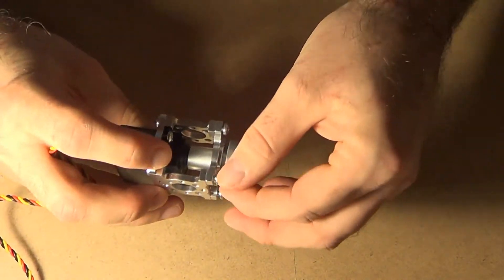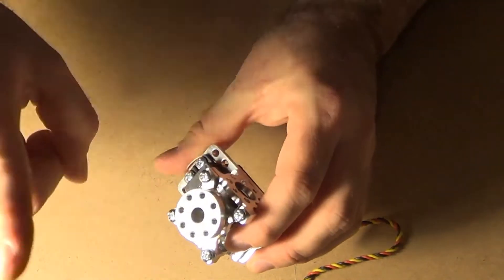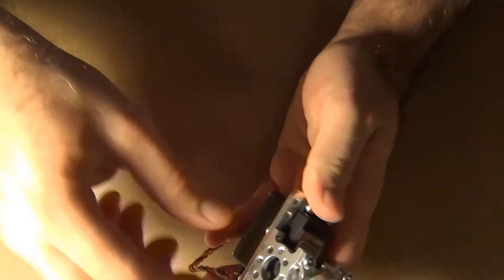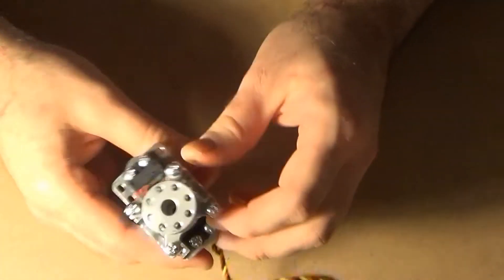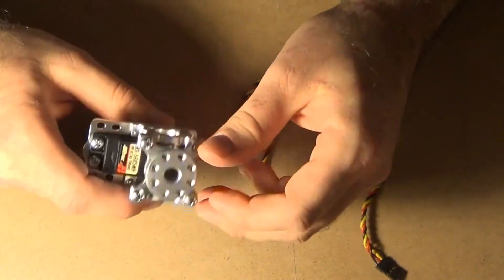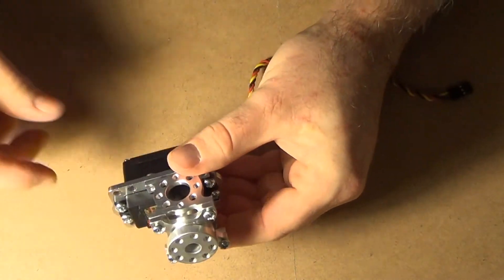The thing that's very nice is there are plenty of screw holes to connect things. So you can connect something to the servo here. You can mount the servo to whatever you want either here or here. And that will make anything you do look really clean and slick.